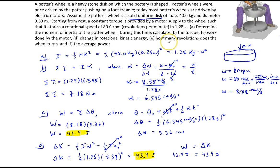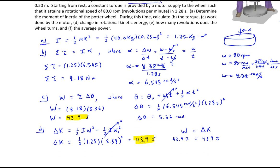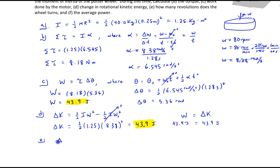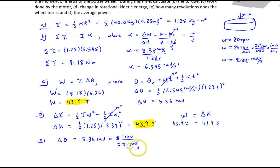Part E asks how many revolutions the wheel makes. We already found the angular displacement of 5.36 radians, so we just convert that to revolutions. Multiplying 5.36 radians by one revolution per 2π radians, the radians cancel and we get approximately 0.853 revolutions — not quite one full revolution.